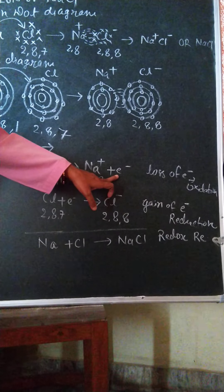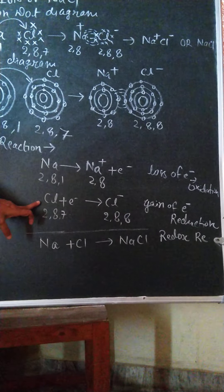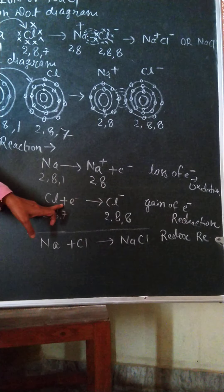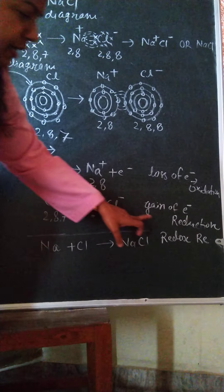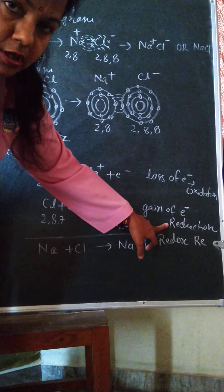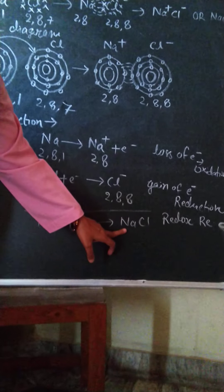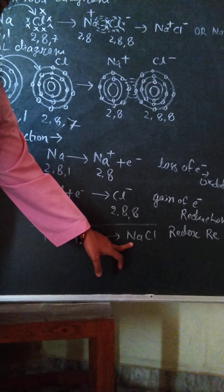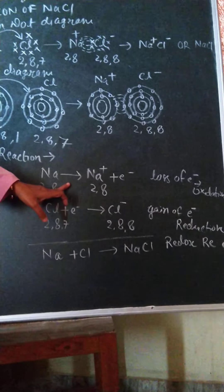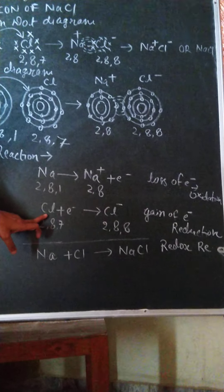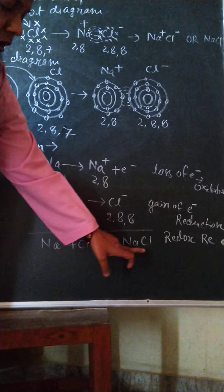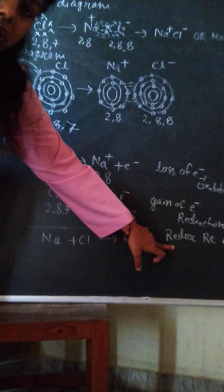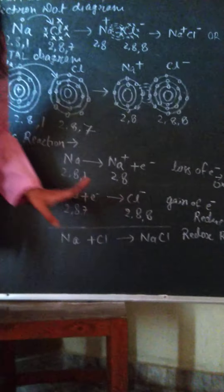The one electron lost by sodium is gained by chlorine: Cl + e⁻ → Cl⁻. Gain of electron is called reduction. So the formation of NaCl is actually a redox reaction, because sodium loses an electron which is gained by chlorine. Na + Cl → NaCl is a redox reaction. That's all for today's video.